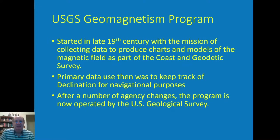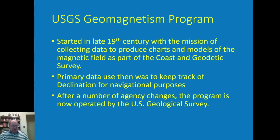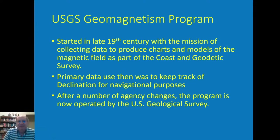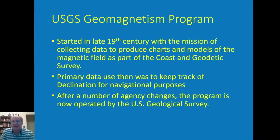The USGS has had a geomagnetism program — it started in the late 19th century with the mission of collecting data to produce charts and models for navigational purposes. It was originally part of the U.S. Coast and Geodetic Survey, but after a number of agency changes and 120 years later, it's now operated by the U.S. Geological Survey. For a long time, that's all our group did — publish data and produce charts and models of the magnetic field and make them available to the public.